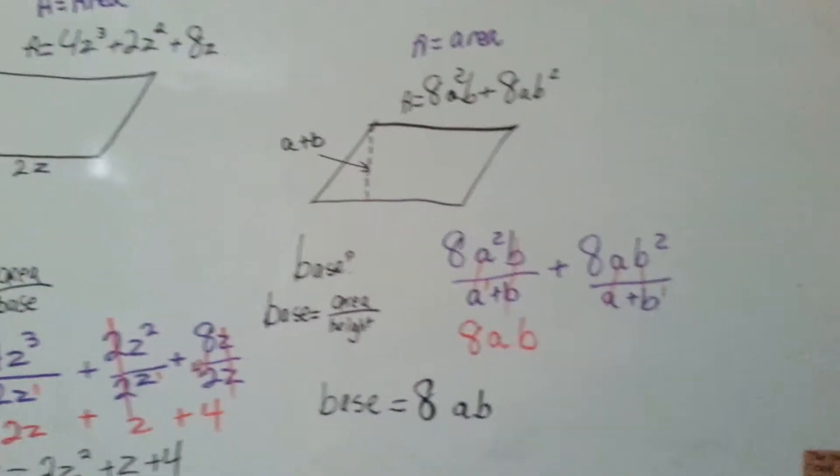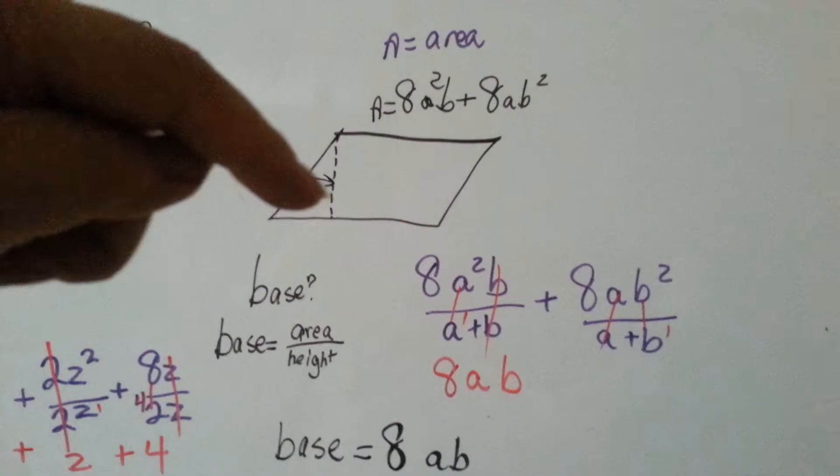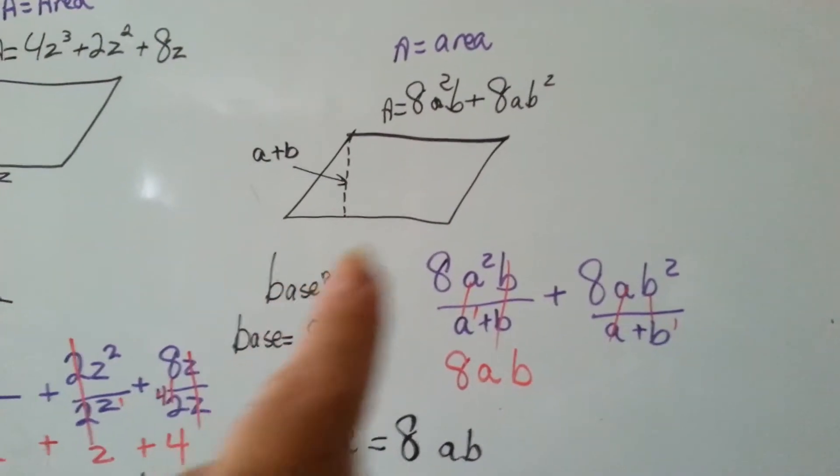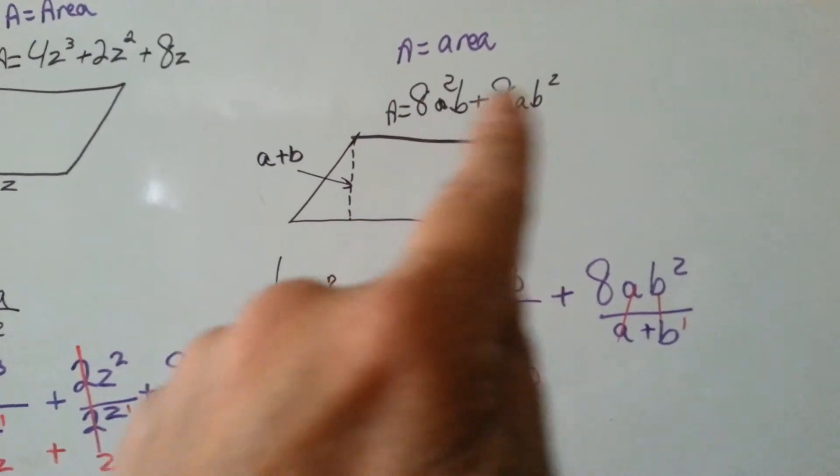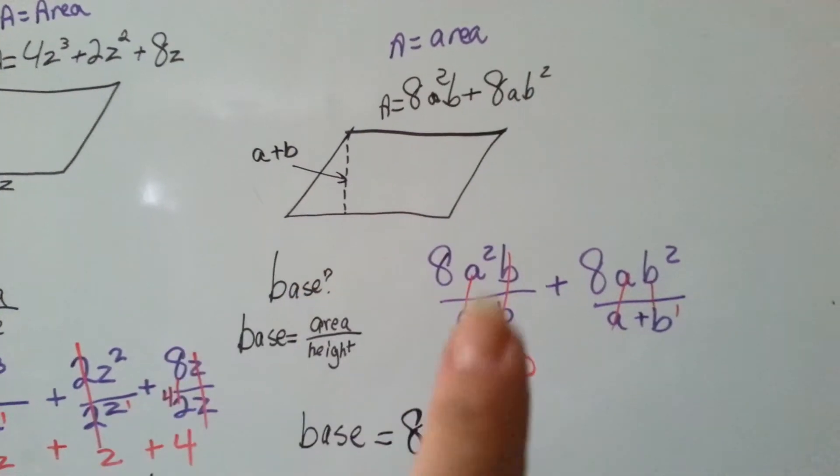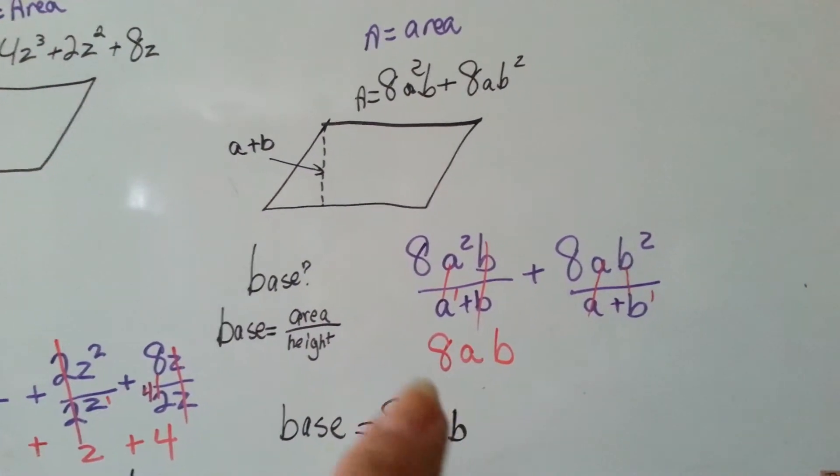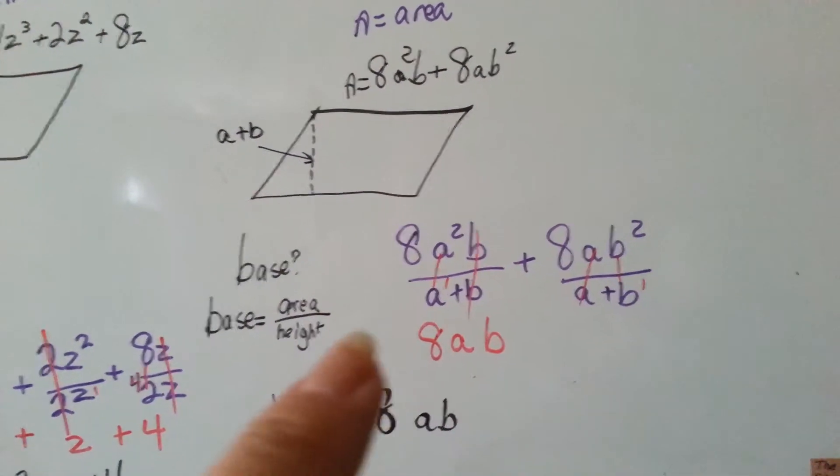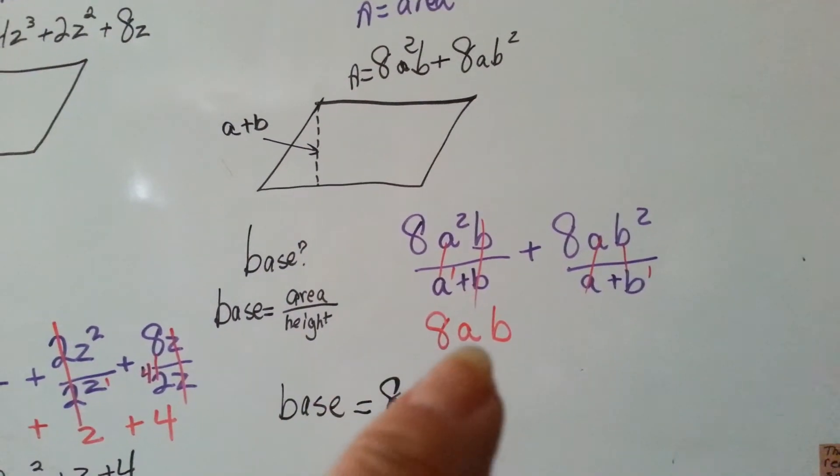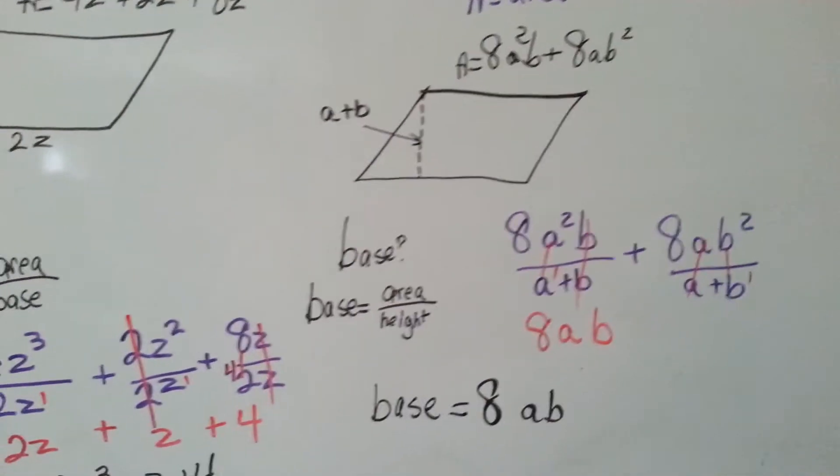Let's look at this one. Okay, here's our height. We need to find the base. Here's our area. We're going to split it into two parts, and divide both sides by the a plus b, and after canceling out, we're going to get 8ab, and that's our base.